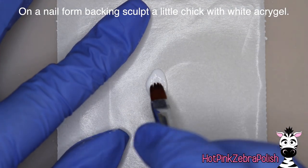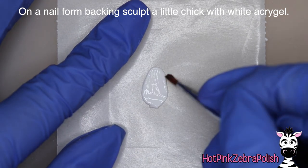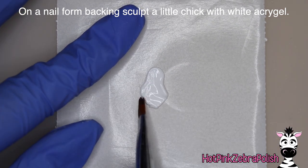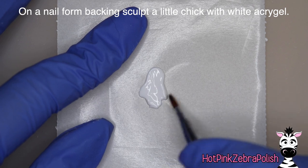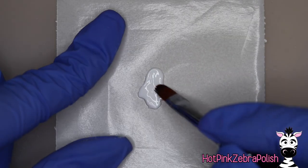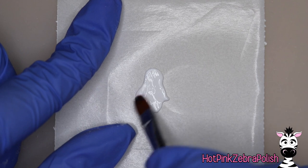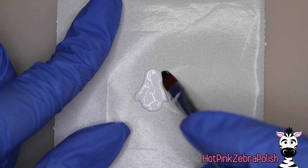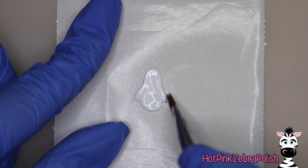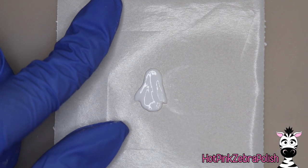So now in a nail form backing I'm going to be sculpting my little chick with white acrogel. I don't typically sculpt with acrogel, typically if I was going to be sculpting little 3D bits like this I would use 4D gel. But every once in a while I get asked can you sculpt with acrogel and the answer is well yes you can.